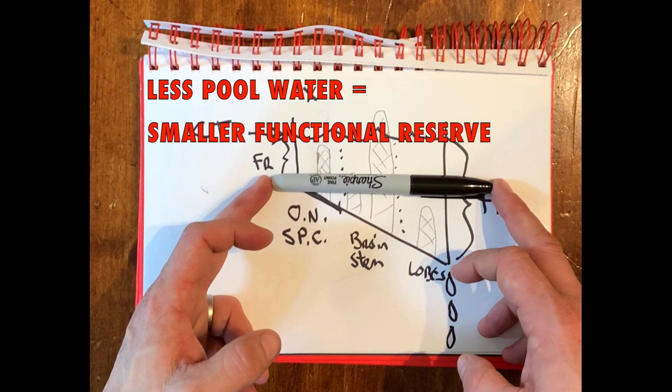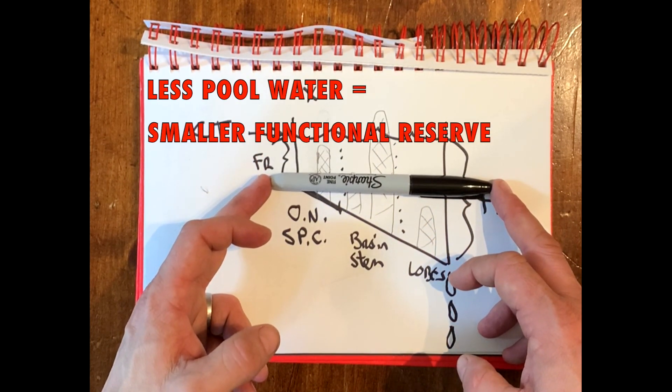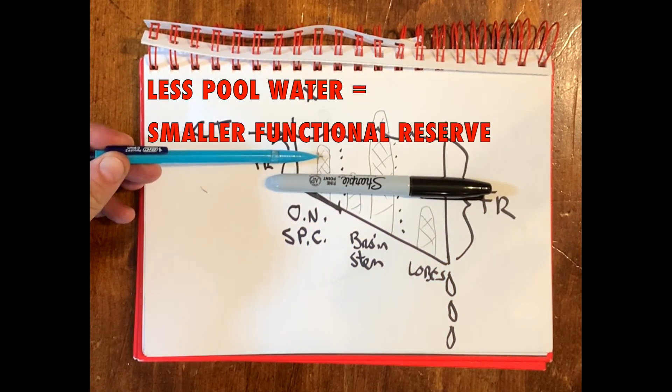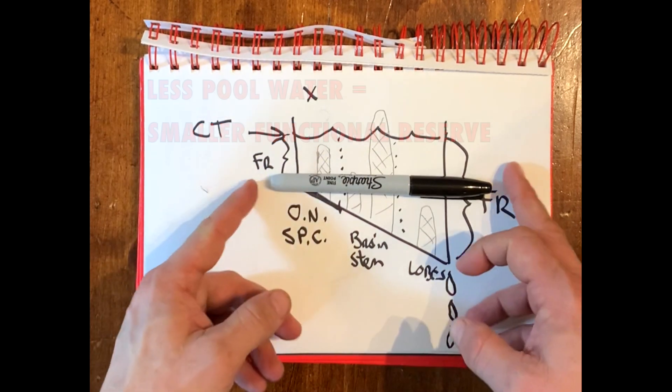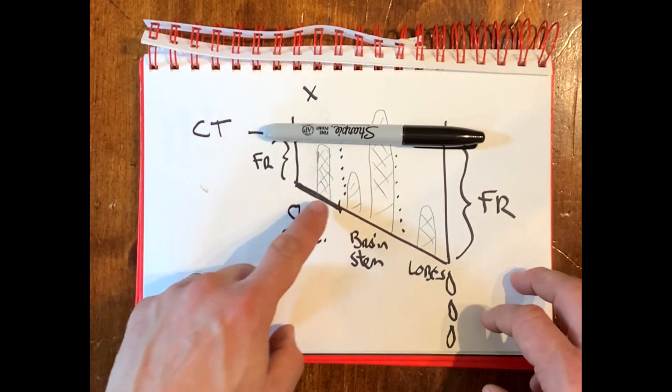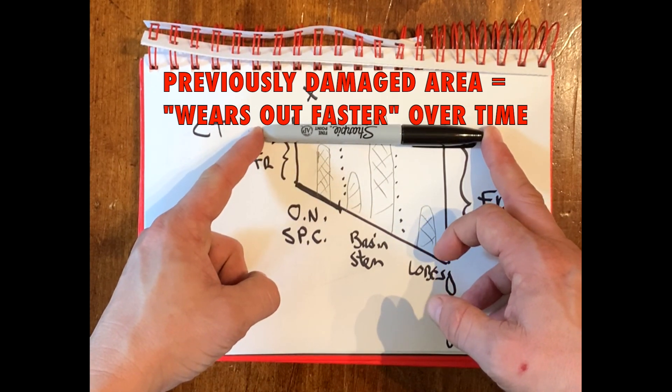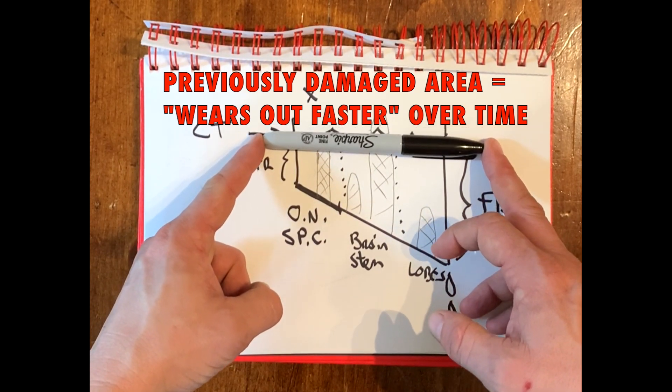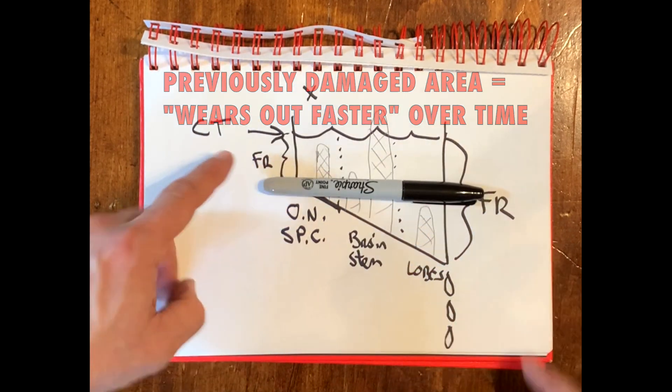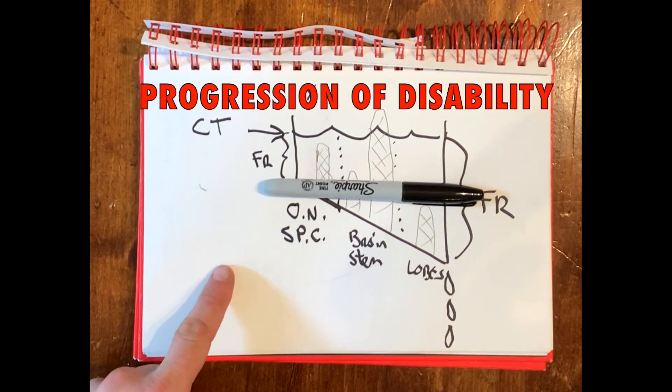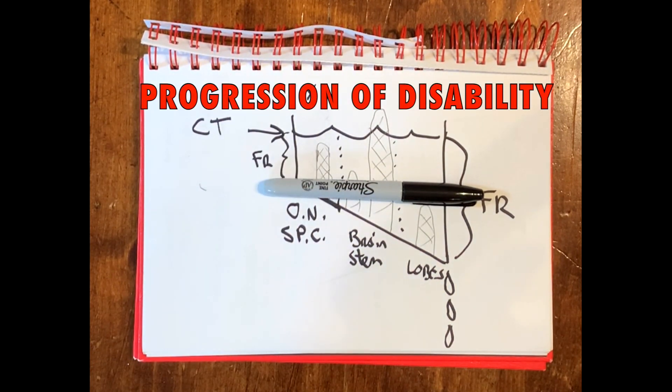Now if you think of my pen as the water level, what you see is that the water level has uncovered this area of old structural damage. So the water was up here, and over the years that area of optic neuritis that got better, well the optic nerve is still damaged, and as the water level drops, it uncovers that area of damage, and the person again develops difficulties. That is the underpinnings of progression, and I think that that's a very important concept.